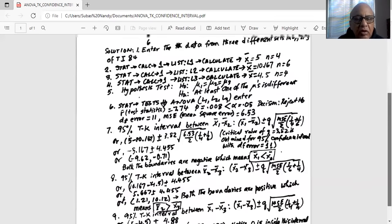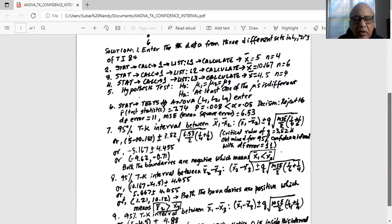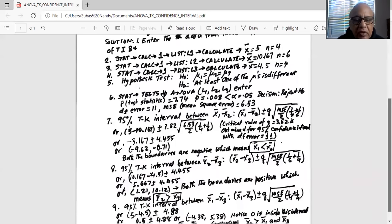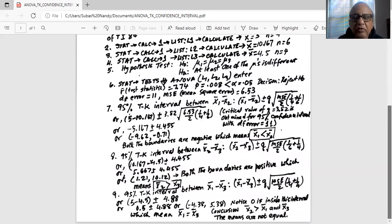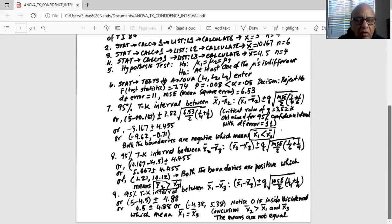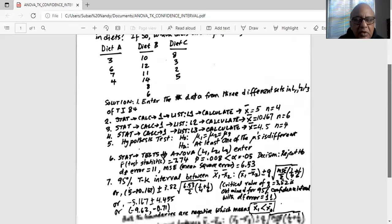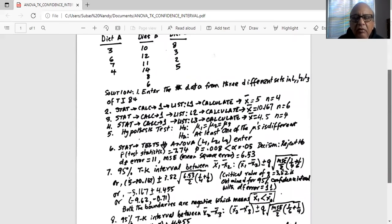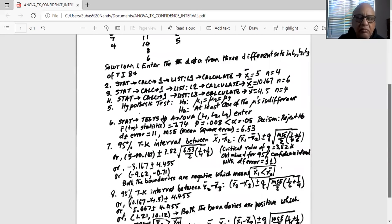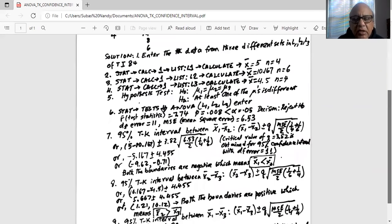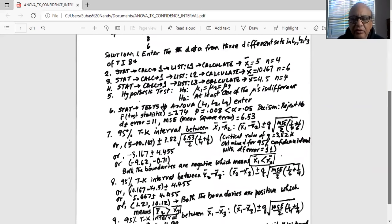Therefore, the means are not equal as we have concluded before because we have rejected the null hypothesis. From this TK calculation, we found out that x2 bar is the mean of treatment 2, which is diet B, is significantly different from the mean of diet A and diet C, which we did by the TK procedure calculation.